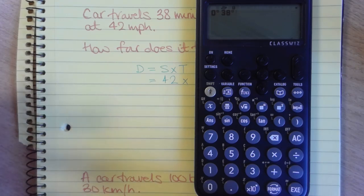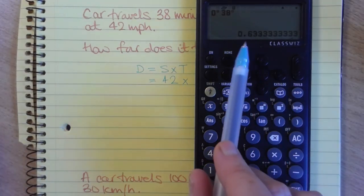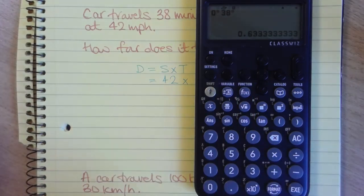You don't have to actually put in 0 seconds. You can just leave it like that. If you press execute, it will tell us that's 0.6333 of an hour.